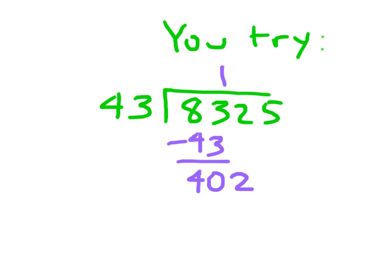Did you come up with that for your first step? Did you bring down the 2? What did you put in the quotient? I would have tried 9. 9 times 3 is 27, regroup the 2. 9 times 4 is 36, plus 2 is 38. That looks right. Subtract: 15. Fine. That is smaller than 43.